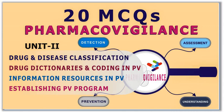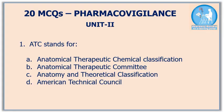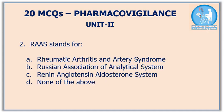Hello students. This video contains 20 multiple choice questions taken from the pharmacovigilance unit 2nd. First question: ATC stands for — the correct answer is option E, anatomical therapeutic chemical. The ATC system classifies therapeutic drugs.